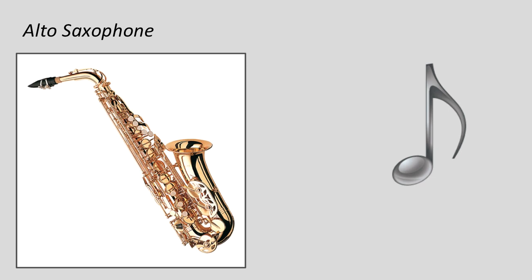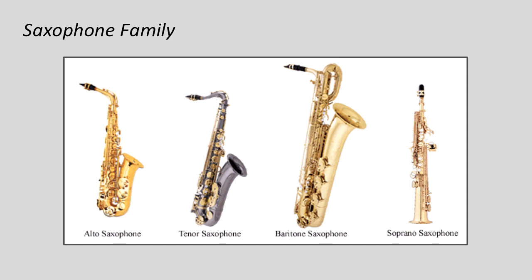You can hear from this sound sample that the saxophone has a slightly edgier sound than the clarinet but can also be wonderfully mellow. And of course, there are different sizes. The one we just listened to is the alto saxophone. You can go smaller with the soprano saxophone, or larger with the tenor, and then even a little bit larger with the baritone sax — which has a little loop in it to give it some extra length.